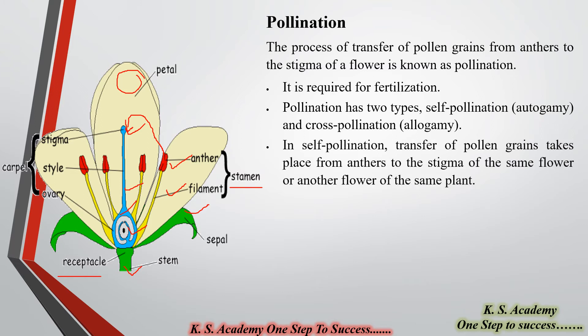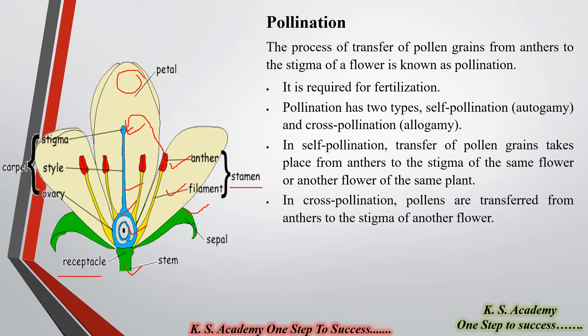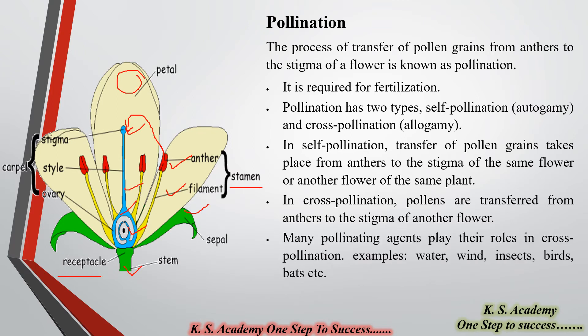Self-pollination means the transfer of pollen grains takes place from the anther to the stigma of the same flower or another flower of the same plant. Cross-pollination means that pollen grains are transferred from a flower of one plant to the stigma of a flower on a different plant — two different plants are involved in reproduction.